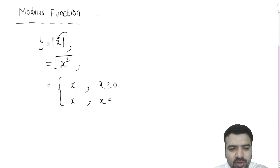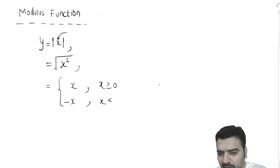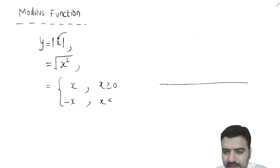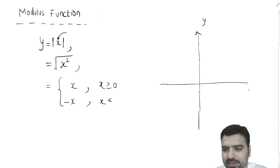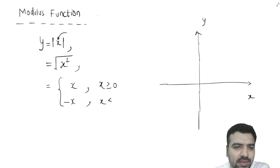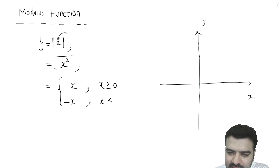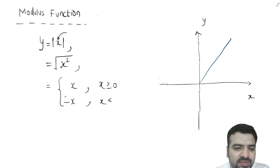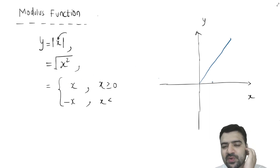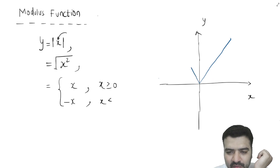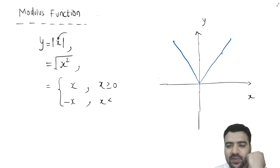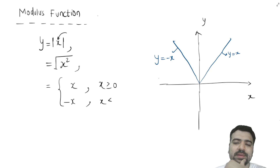That is the definition of modulus function. Now if you want to plot it: this is y, this is x. The graph looks like a V-shape. y = x is a line passing through the origin with a 45-degree slope, and y = -x is the other line. Together these form the graph of the modulus function.